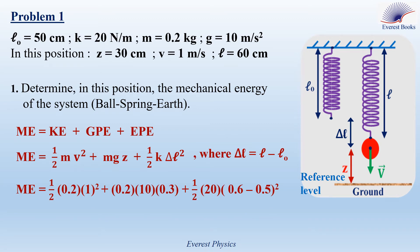Start with the kinetic energy: mass is 0.2 kg, speed is 1 m/s. For the gravitational potential energy: mass is 0.2 kg, gravitational acceleration is 10, and Z is 30 cm, which is 0.3 m. For the elastic potential energy: the force constant is 20 N/m, and ΔL = L − L0. The final length is 60 cm, so 0.6 m, and the natural length is 50 cm, so 0.5 m. This gives a value of 0.8 Joules.